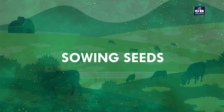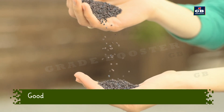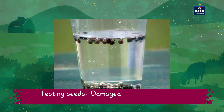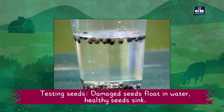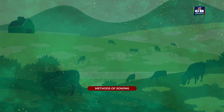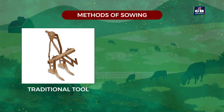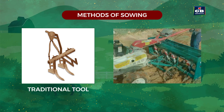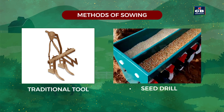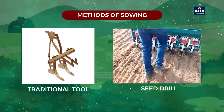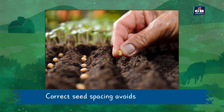Leveling of land is done after ploughing to ensure even land. Next, sowing seeds — good quality seeds are selected to give a better yield. Testing of seeds: damaged seeds float in water, while healthy seeds sink. Methods of sowing: a traditional funnel-shaped tool is used for sowing. Seed drills are used with tractors for even sowing and covering seeds with soil. Correct seed spacing avoids overcrowding.